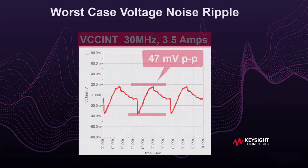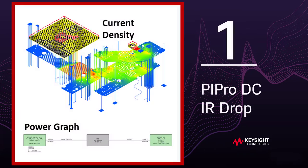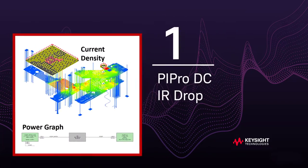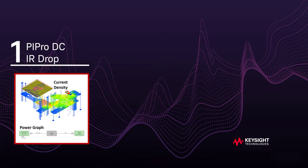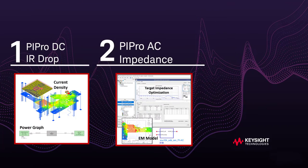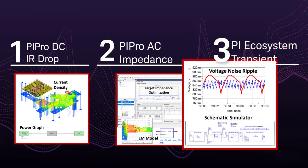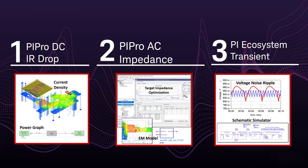Now I will demonstrate the power integrity simulation workflow that found this worst-case forced response noise ripple on the power rail. The workflow includes DC IR drop, AC EM impedance models, and full PI ecosystem time domain simulations.